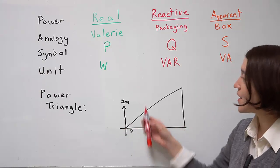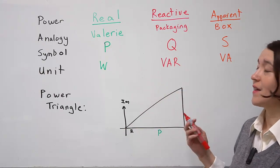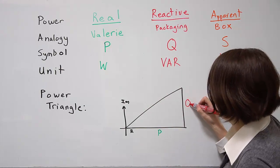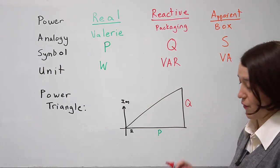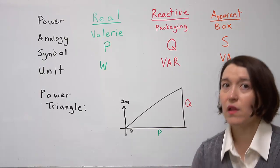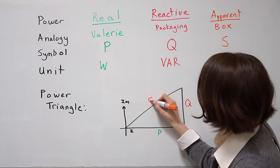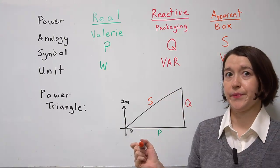The imaginary part is representative of the reactive power. So Q is represented on this side, the vertical side. And then the longest one, the hypotenuse of the triangle, is the apparent power as shown here.